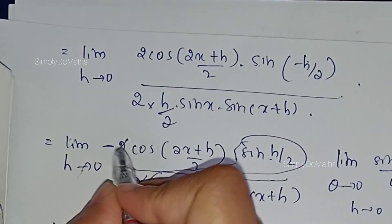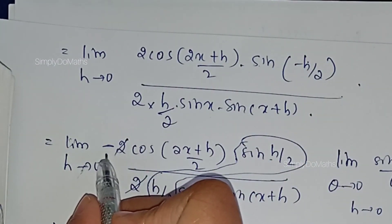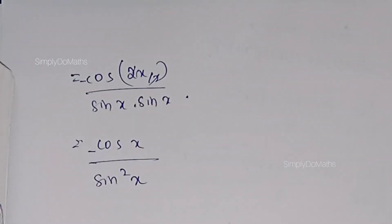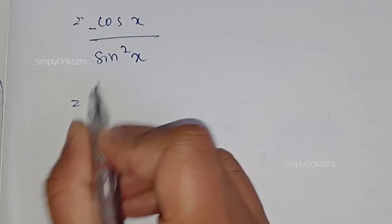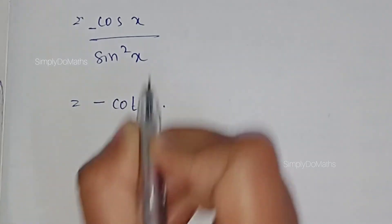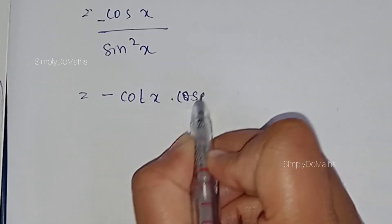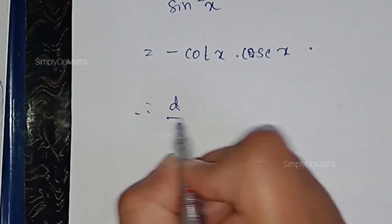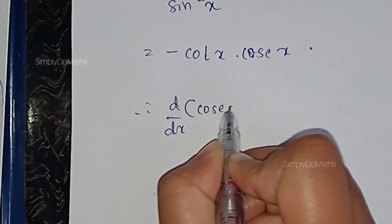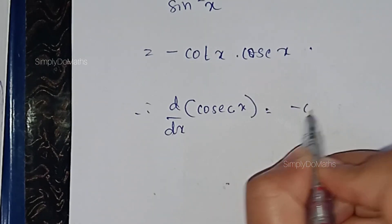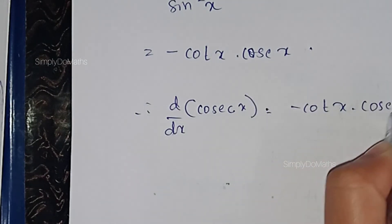Since 2x/2 simplifies to x, we are left with cos x divided by sin²x, with a negative sign out front. So this is nothing but −cos x / sin²x, which equals −(cos x / sin x) · (1/sin x) = −cot x · cosec x. Therefore, d/dx of cosec x is equal to −cot x · cosec x.